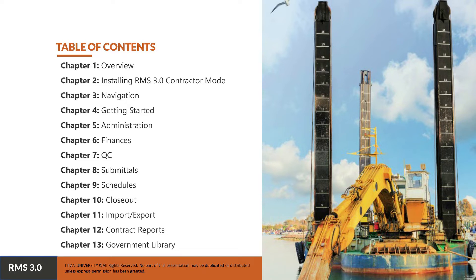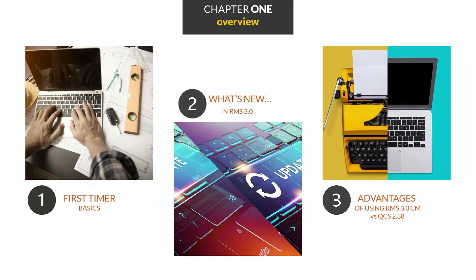If you have been a quality control manager for a while, you'll more than likely have experience with the older document management system called QCS 2.38. Let's start with an overview to help you understand what makes RMS different from QCS 2.38. To start, the term QCS is no longer used. Instead, we call it RMS or RMS 3.0.